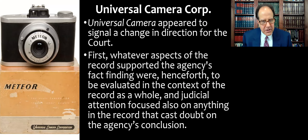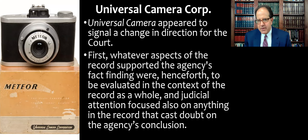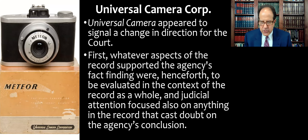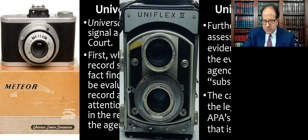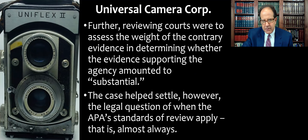Universal Camera appeared to signal a change in direction for the court. First, whatever aspects of the record supported the agency's fact-finding were henceforth to be evaluated in the context of the record as a whole, with judicial attention focused also on anything in the record that cast doubt on the agency's conclusion. The court was going to weigh it — not saying the evidence supporting the agency always has to be more, but here there was evidence they found pretty troubling and not enough on the other side to justify being so dismissive of it. Reviewing courts were supposed to assess the weight of the contrary evidence in determining whether evidence supporting the agency amounted to substantial.